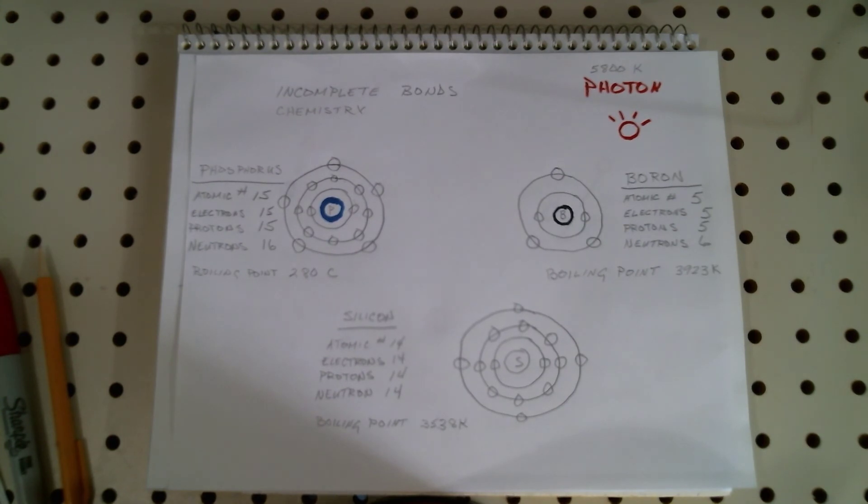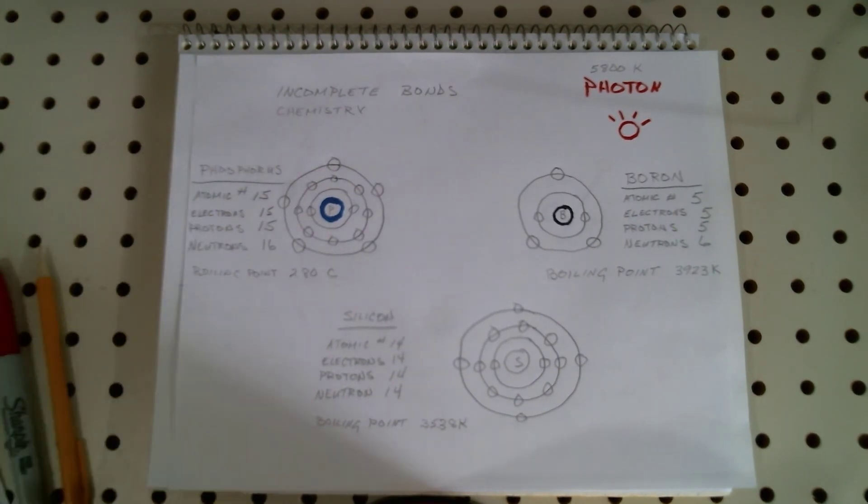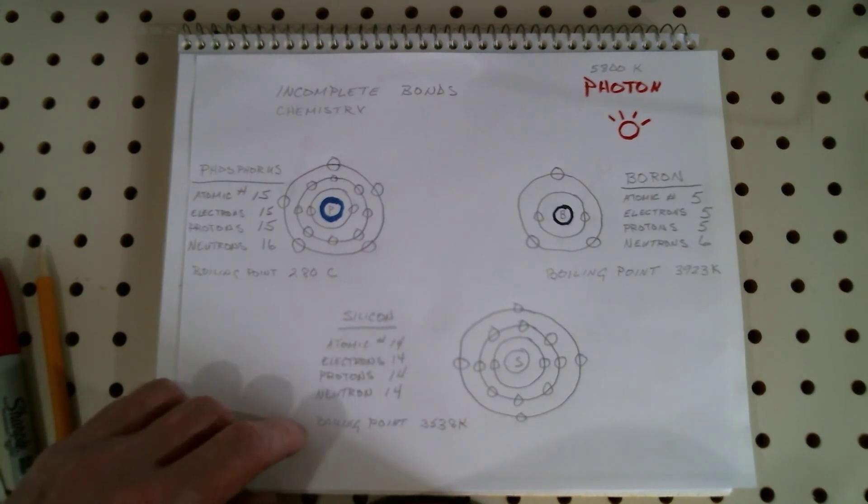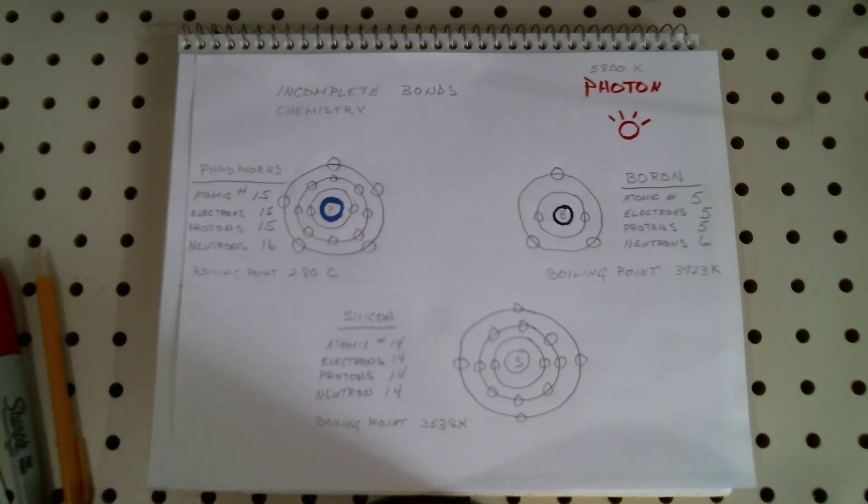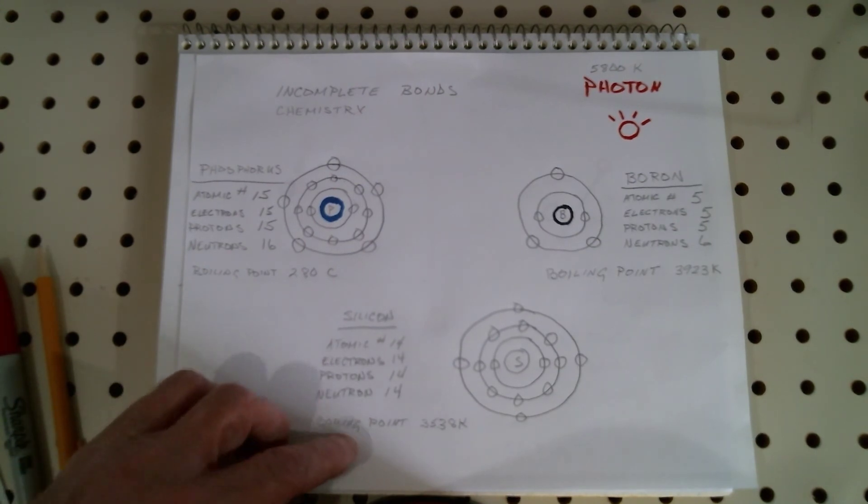Okay folks, before we get into the testing of the cell and the construction of the light box, I wanted to briefly go over some of the physics and in particular the high-energy physics of how solar cells work, how the pn junction works, how photosynthesis works and how the photovoltaic effect as described by Einstein takes place. Now this is a busy little chart right here but I wanted to lay everything out in complete detail for you so that we can discuss incomplete bonds chemistry and how this works. Silicon is a full atom, it has 14 electrons, 14 protons, 14 neutrons.